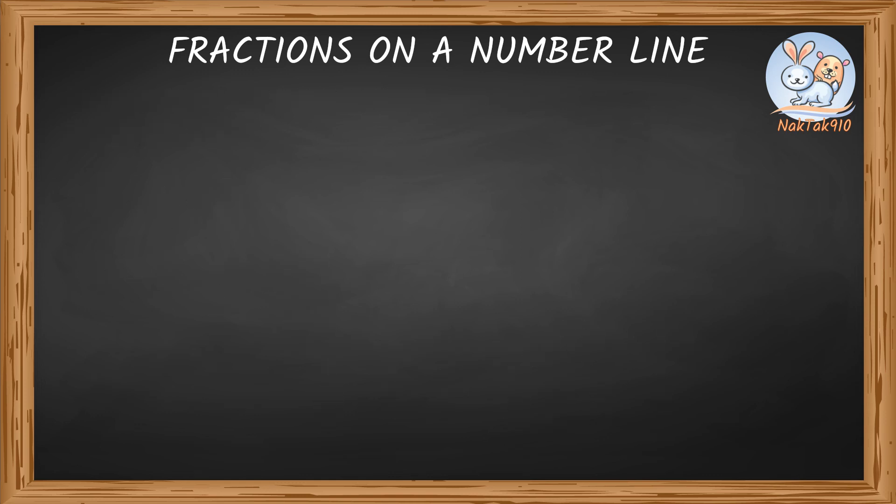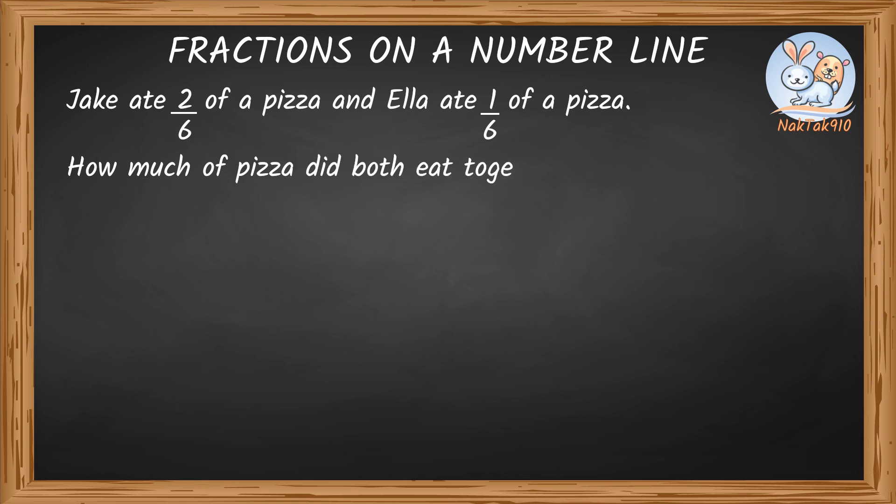Try this example. Jack ate 2 sixths of a pizza and Ella ate 1 sixths of a pizza. How much of pizza did both eat together? Friends, try solving with me. Jake and Ella together means we need to add 2 by 6 and 1 by 6. To add 2 by 6 and 1 by 6, let's add using our usual addition first. 2 by 6 plus 1 by 6 equals 2 plus 1 over 6, which is equal to 3 by 6.